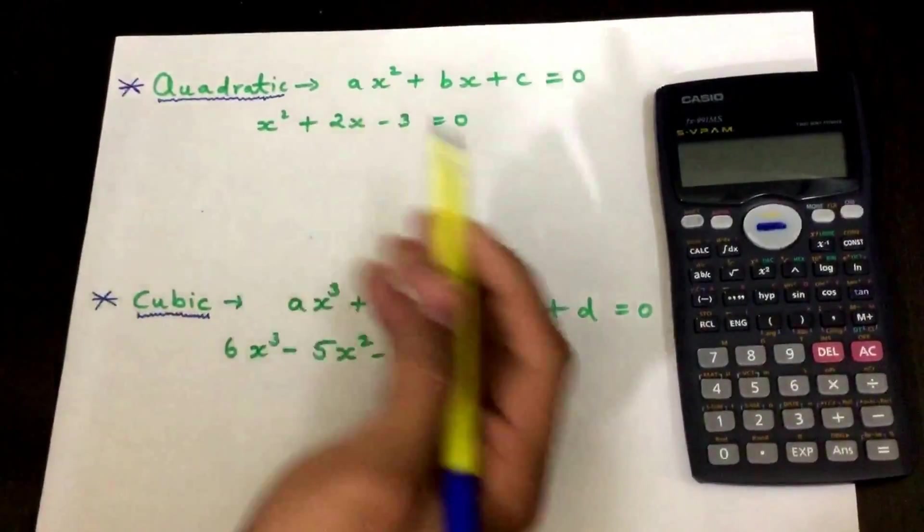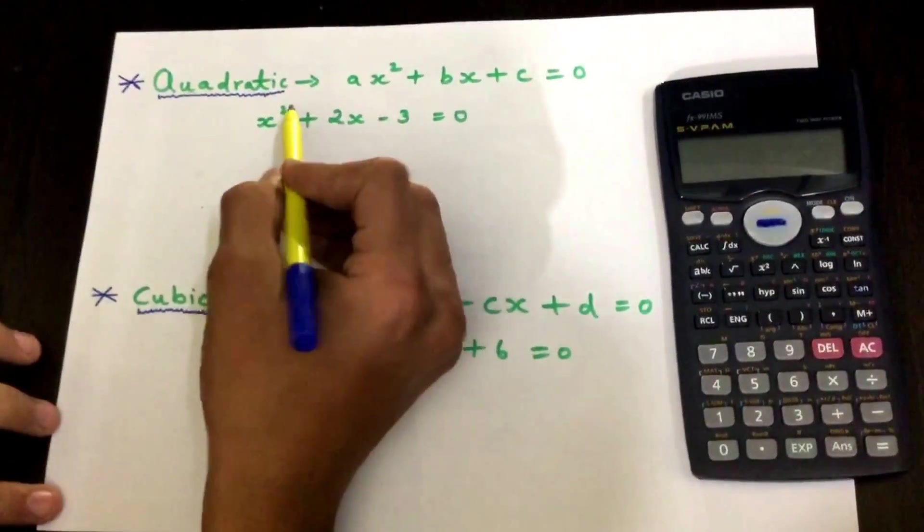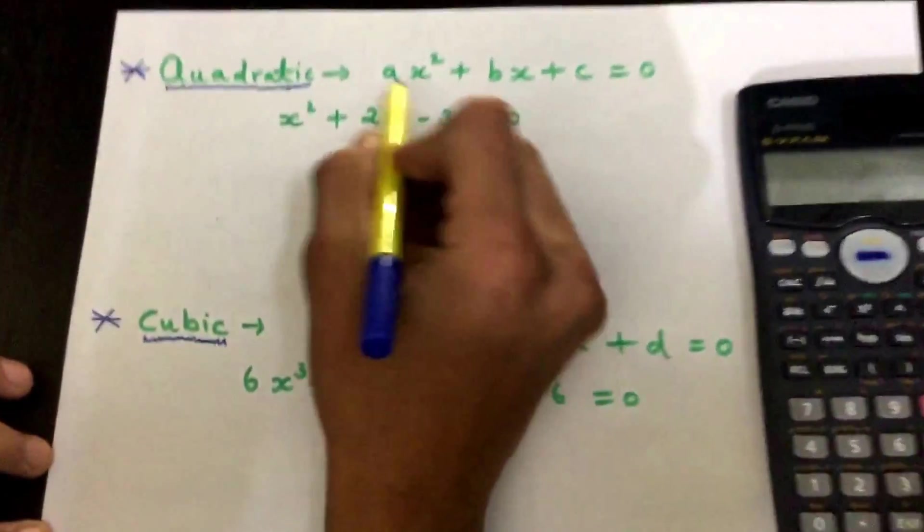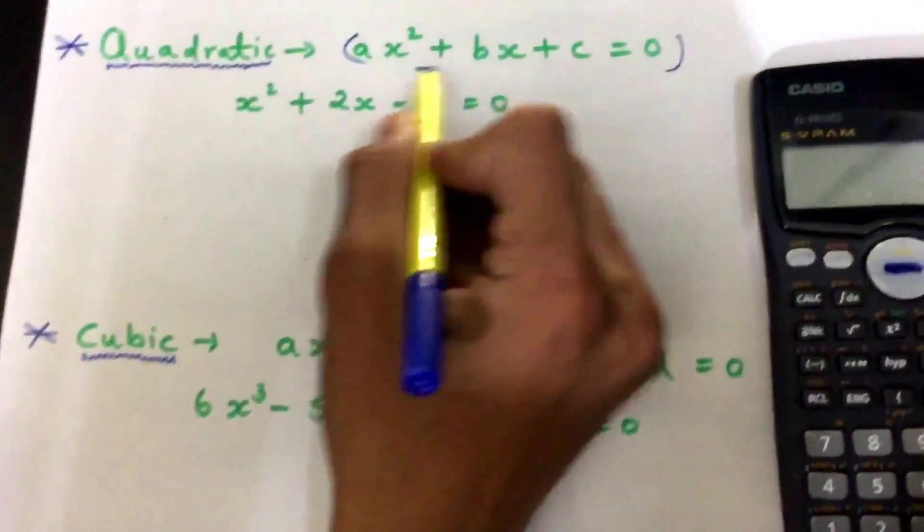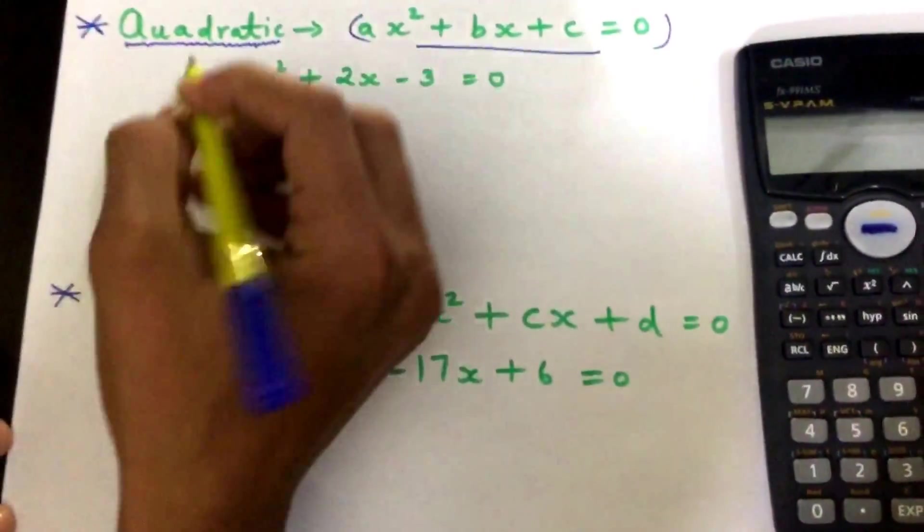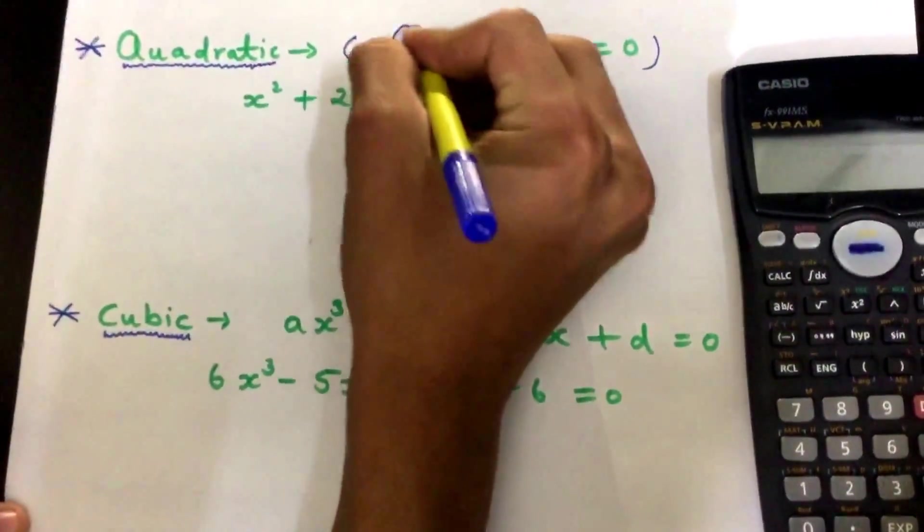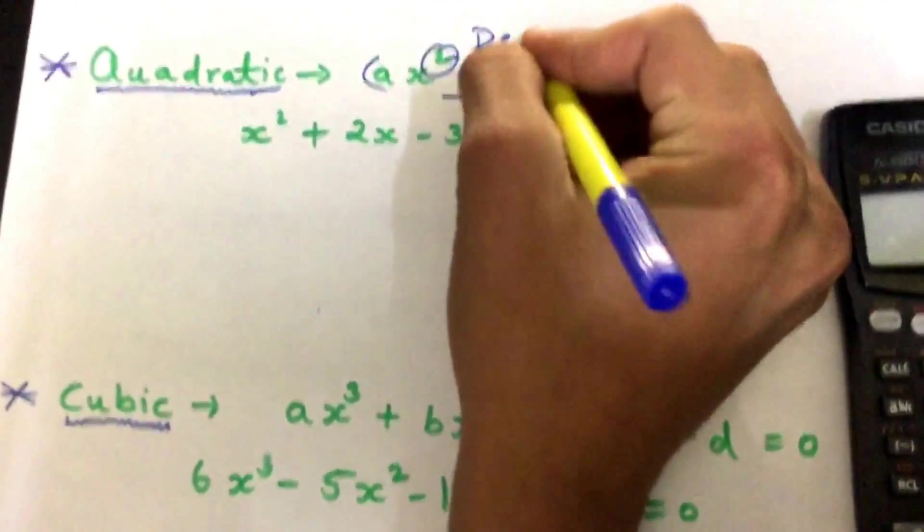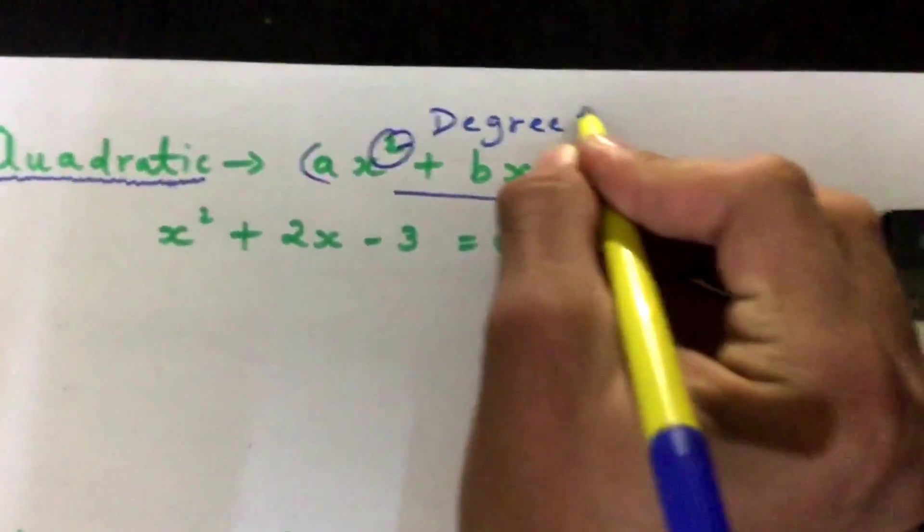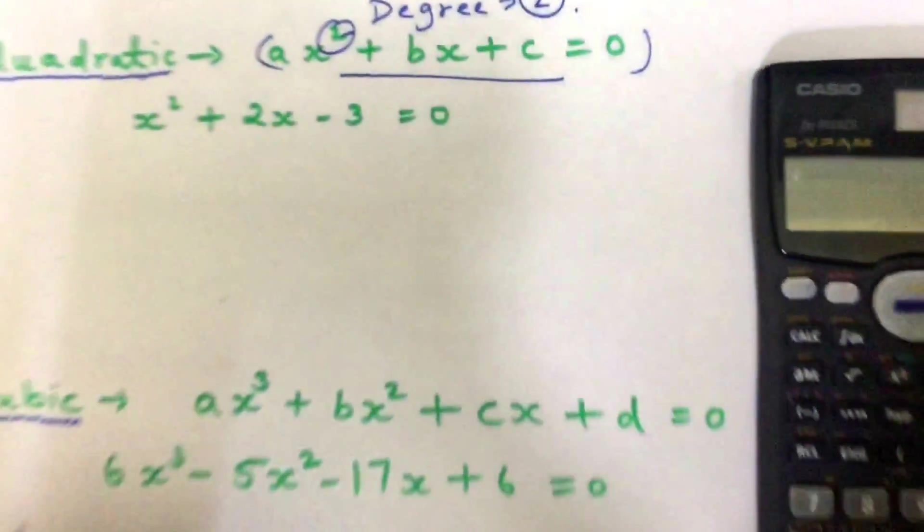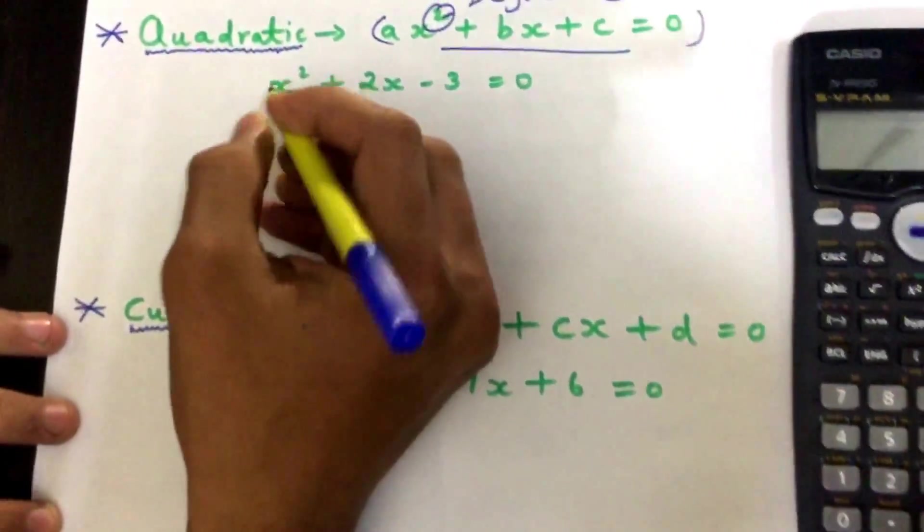...make a few things clear about quadratic equations. First, it has to be in this kind of structure. The most crucial thing is the degree - the degree must be two.